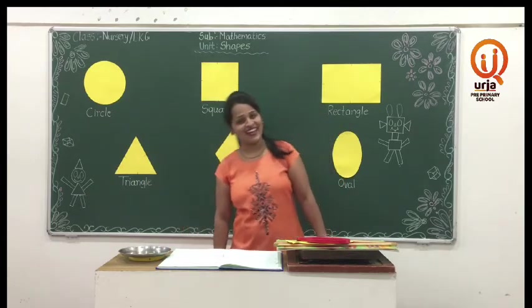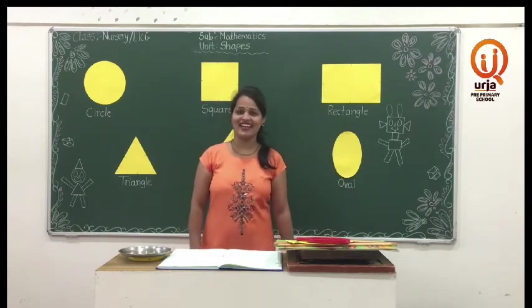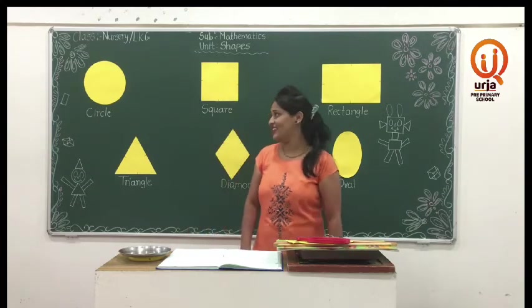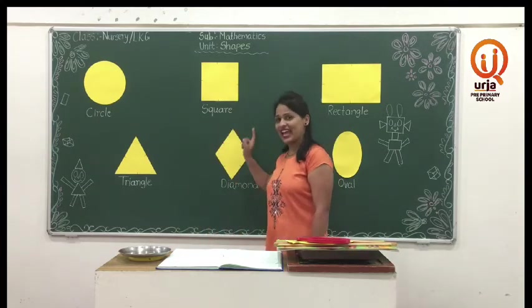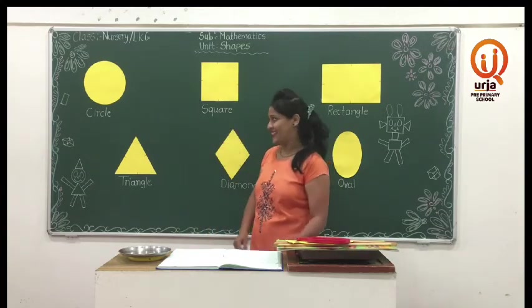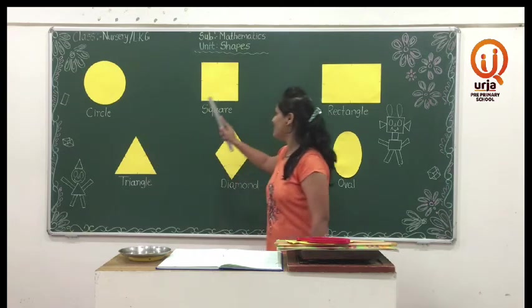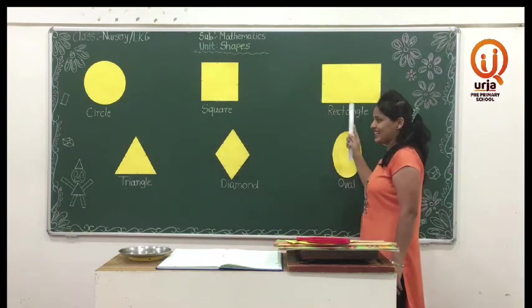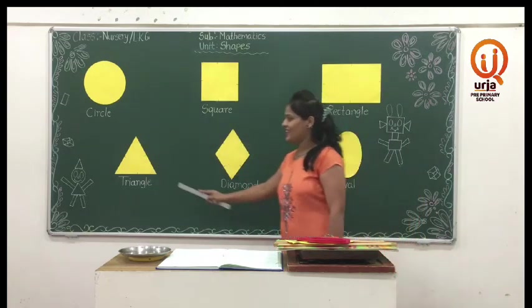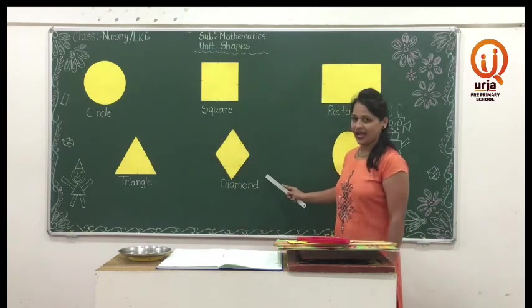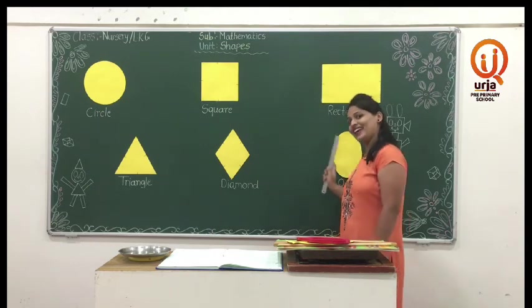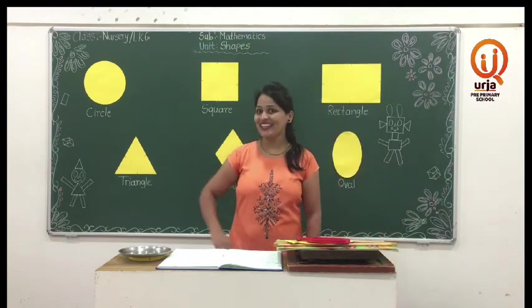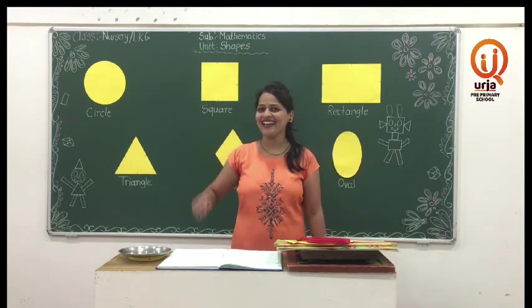So today we have learnt shapes — circle, square, rectangle, triangle, diamond and oval. So meet you in the next session, bye.